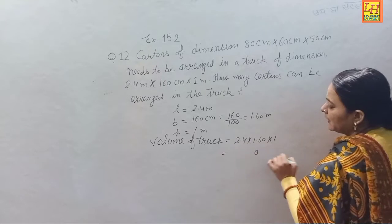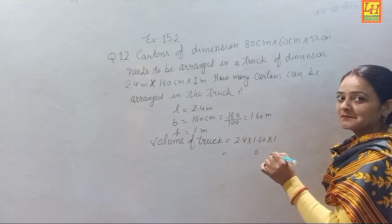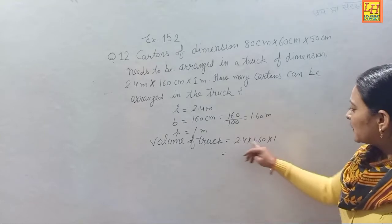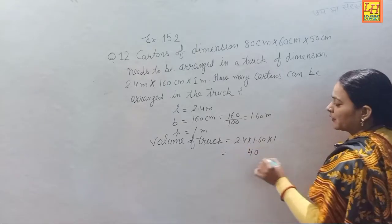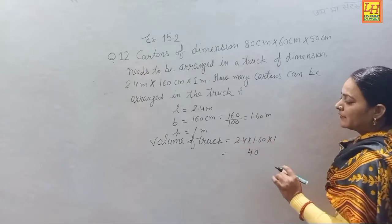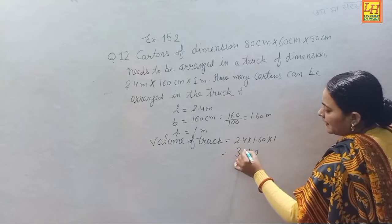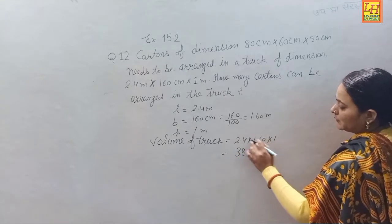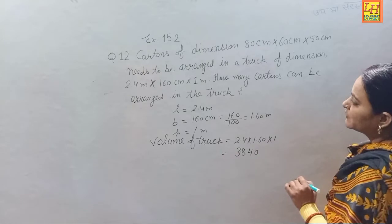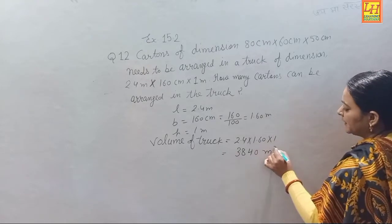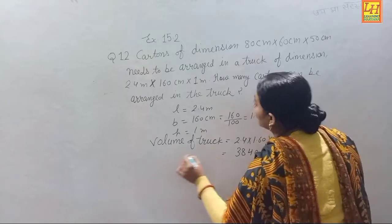Calculating 2.4 × 1.60 × 1: 2.4 × 1.60 = 3.840. So the volume of the truck is 3.840 cubic meters.